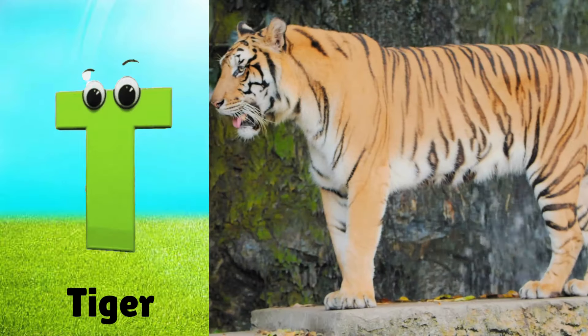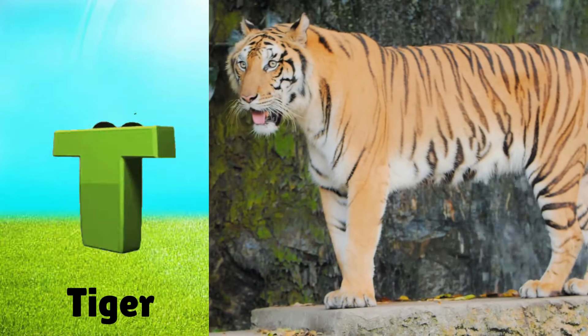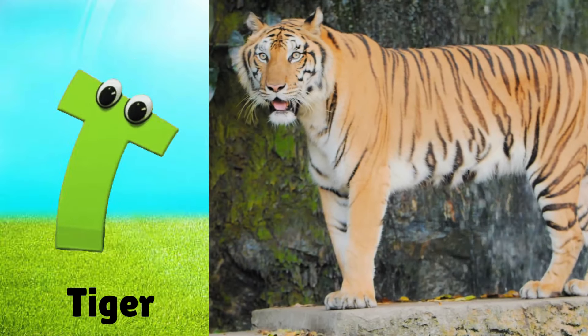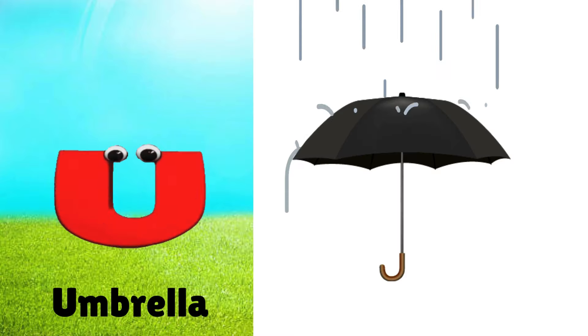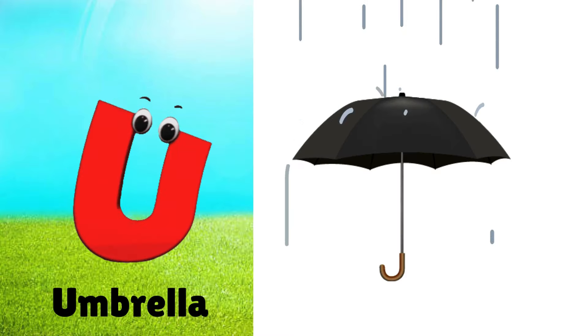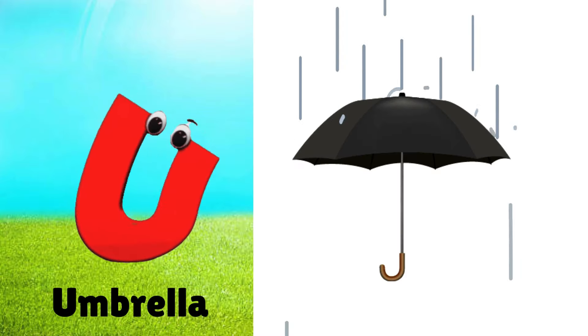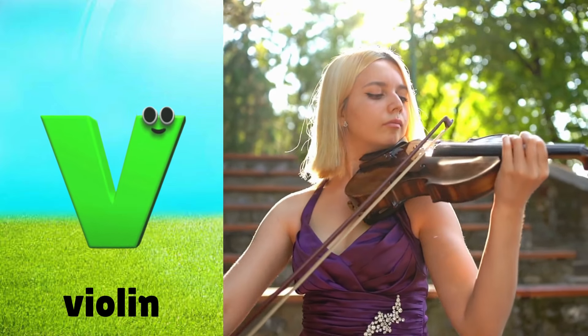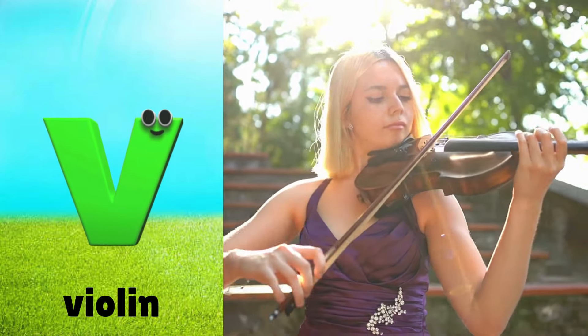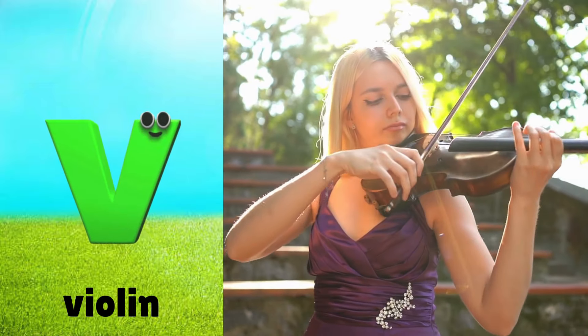Spider. T is for Tiger. T, T. Tiger. U is for Umbrella. A, A. Umbrella. V is for Violin. V, V.